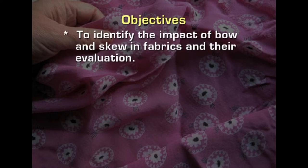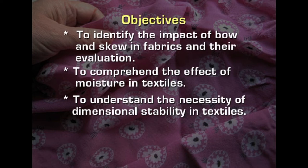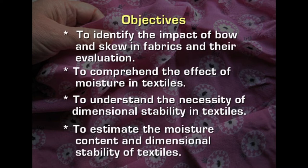If we can identify defects earlier, it is possible to rectify them at the appropriate time, because sometimes when the defects exceed a particular percentage the fabric is altogether rejected in the industry, as they would create problems in the assembly of garments. The objectives are to identify the impact of bow and skewness, to comprehend the effect of moisture, to understand the importance of dimensional stability, and to estimate the moisture content and dimensional stability in textiles.